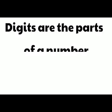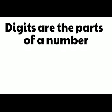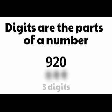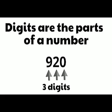Digits are the parts of a number. Look at the number 920. There are three parts, or digits, in this number. The number 920 has three digits. Remember, digits are the parts of a number.